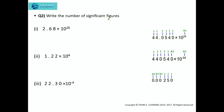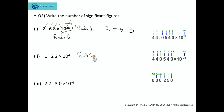Write the number of significant figures. As per Rule 1, non-zero digits are considered significant. And as per Rule 6, powers are not considered significant. So the number of significant figures will be 3. For the next number, as per Rule 1, the non-zero digits are considered significant, giving us 3 significant figures.